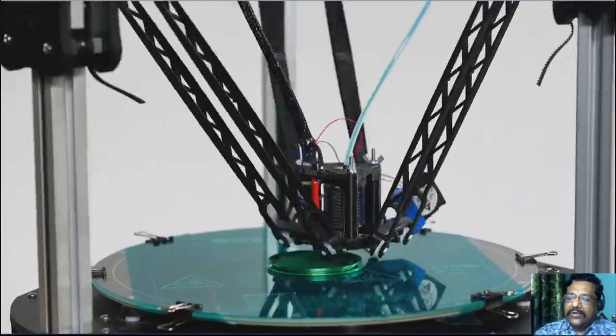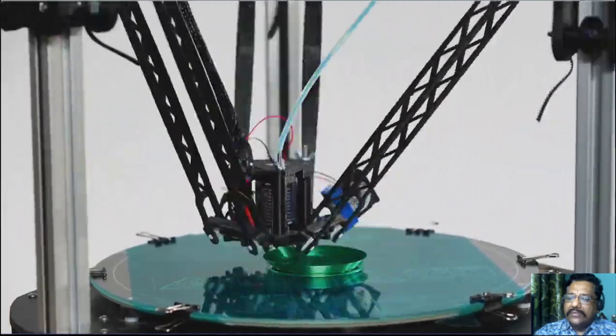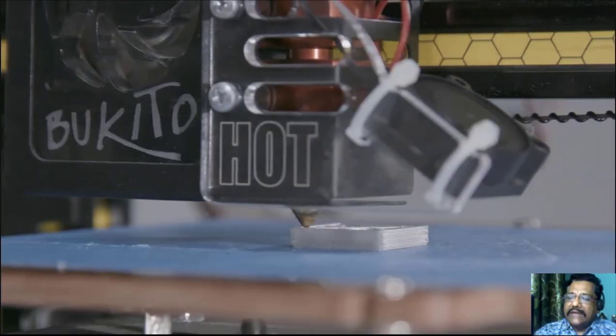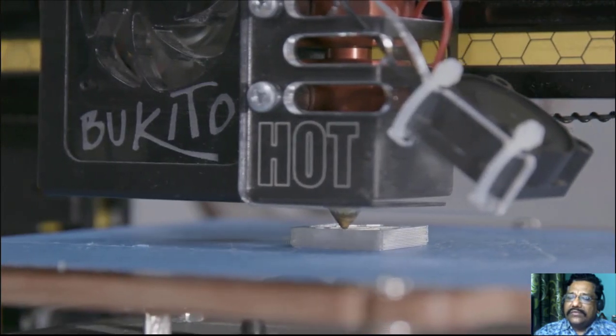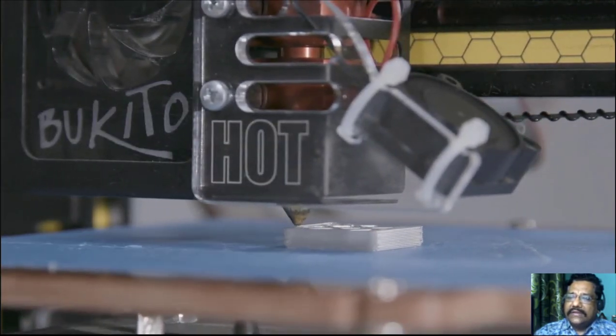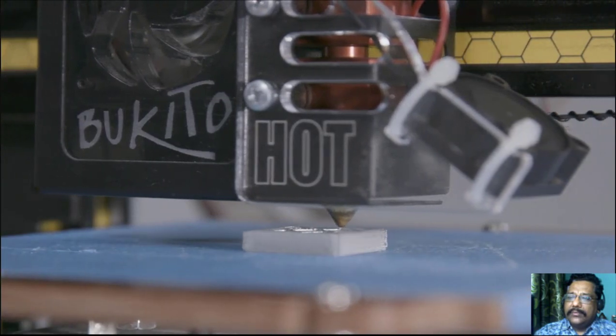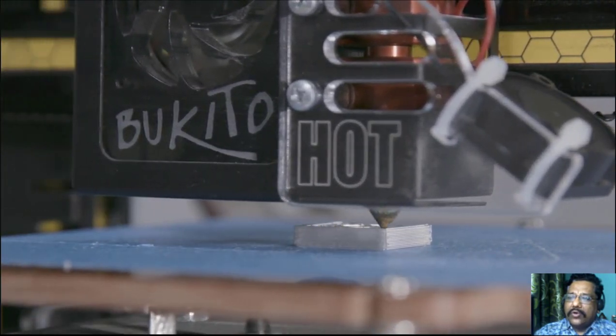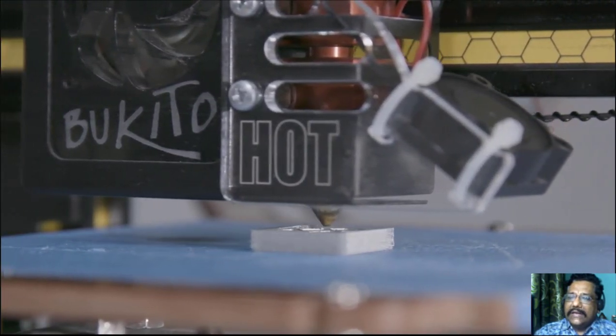With 3D printing being an additive process, you're adding material to get the object. It does this by taking your 3D drawing that you downloaded or created in something like Fusion 360, converting it to math, and sending it to the 3D printer.